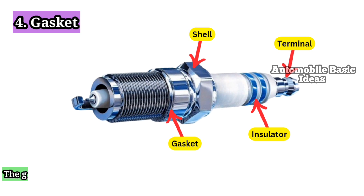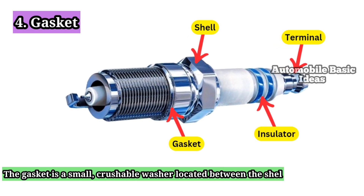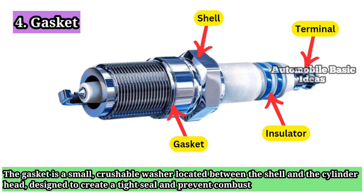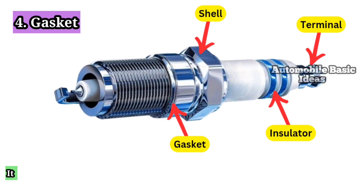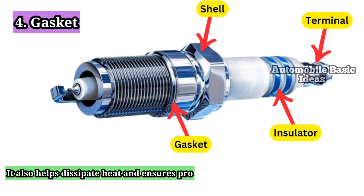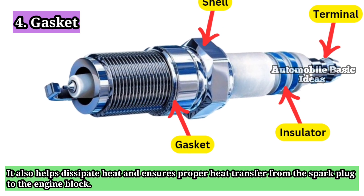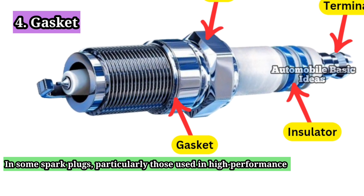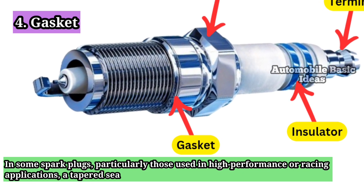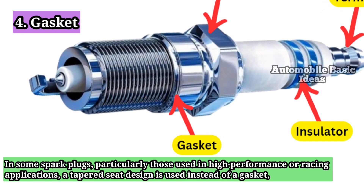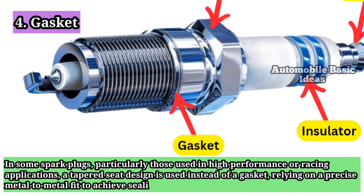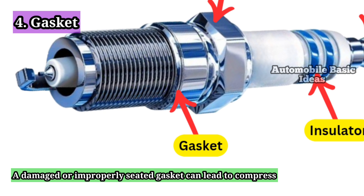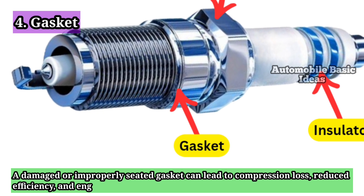4. Gasket. The gasket is a small, crushable washer located between the shell and the cylinder head, designed to create a tight seal and prevent combustion gases from escaping. It also helps dissipate heat and ensures proper heat transfer from the spark plug to the engine block. In some spark plugs, particularly those used in high-performance or racing applications, a tapered seat design is used instead of a gasket, relying on a precise metal-to-metal fit to achieve sealing. A damaged or improperly seated gasket can lead to compression loss, reduced efficiency, and engine knocking.